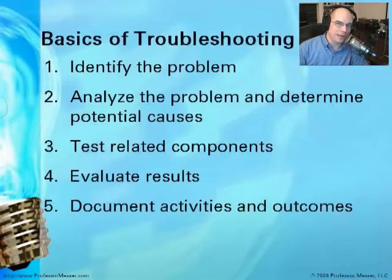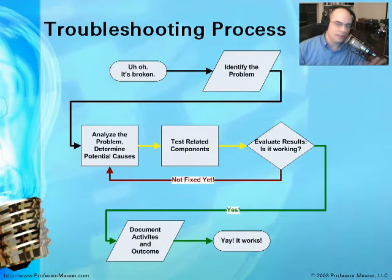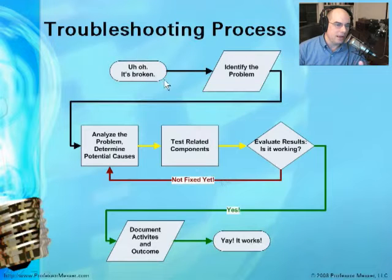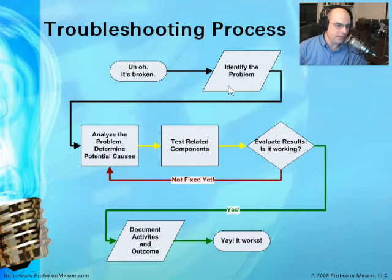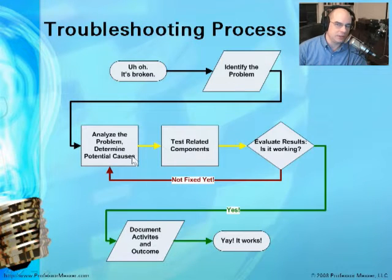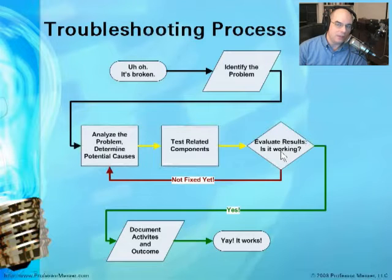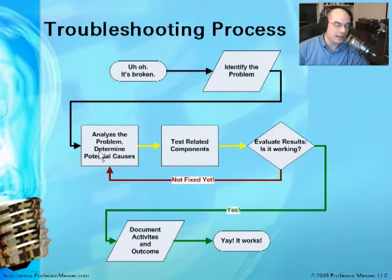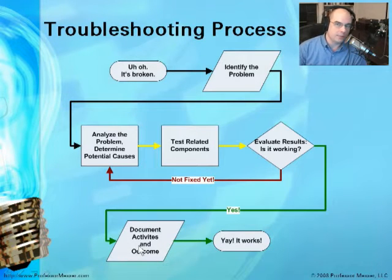That troubleshooting process may not be quite as simple as laid out on one slide. This flowchart graphically takes us through everything we need to know when troubleshooting a problem. We start when something is broken — first, identify the problem. Then we analyze, test, and evaluate. If the problem isn't fixed, we go back to the analysis phase. If it is fixed, we document the process and close out the issue.